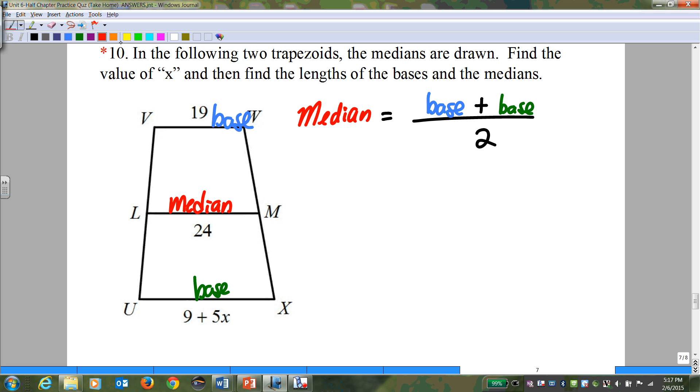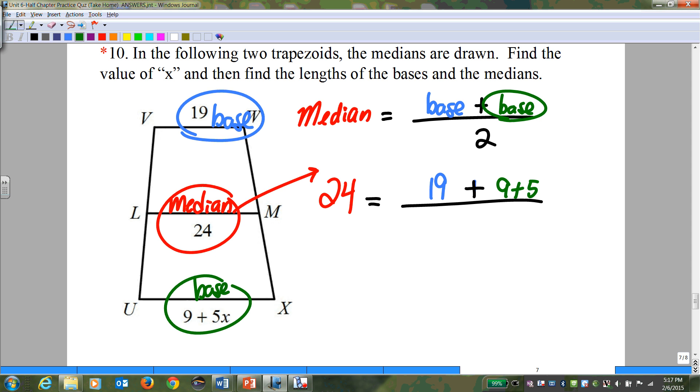Once you write your equation, then you can start circle, plug, chug. So median equals base plus base over 2. You got a whole number, so we're going to put that over 1. Again, you cross-multiply, don't get happy just because you solved for X, because you have to plug it in and find everything else.